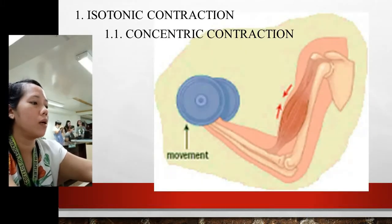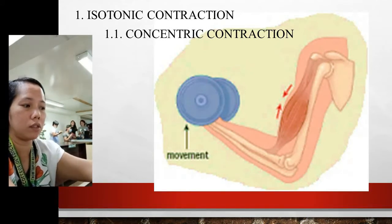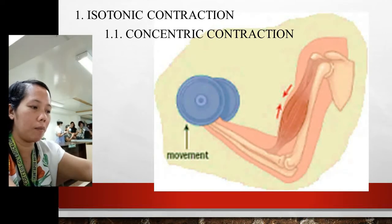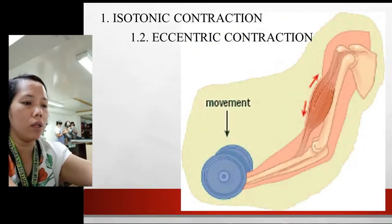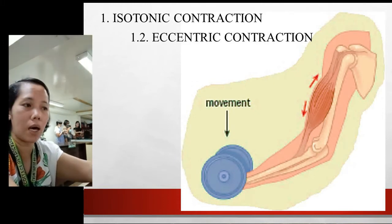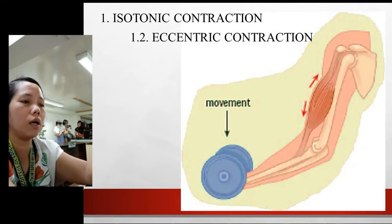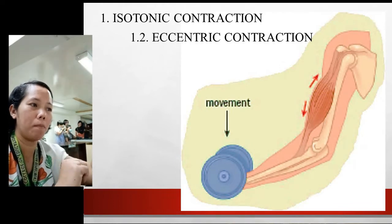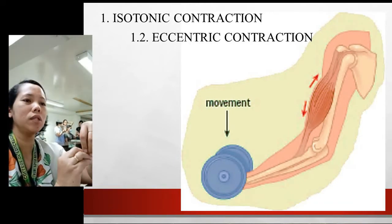In concentric contraction, as shown in the picture, the muscle fibers are shortened. With that movement — going upward — when you lift a weight upward, the effect on your muscle is that it shortens in length. While in eccentric contraction, which is the opposite, if you lower down your hand carrying the weight, it will cause the muscles on that area to lengthen and stretch. So in concentric the muscle shortens, and in eccentric the muscle lengthens.